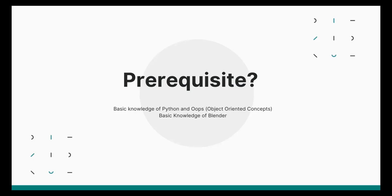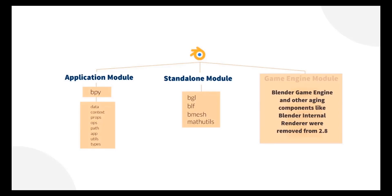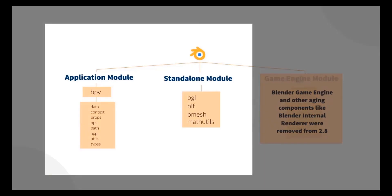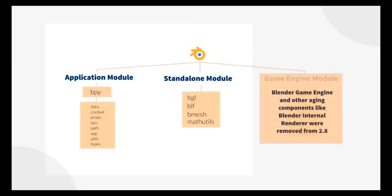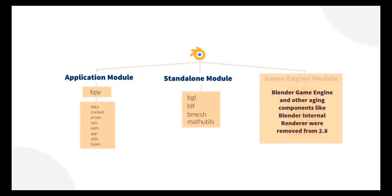The Blender application is made up of three main modules: the application module, standalone, and the game engine module. The game engine module was removed in Blender 2.8, so we'll focus on the application module and the standalone module. The application module is the entire Blender application itself. The term 'bpy' corresponds to it and is made up of different sub-modules — for example, data, context, ops, and path. Every action in Blender happens because of this application module.